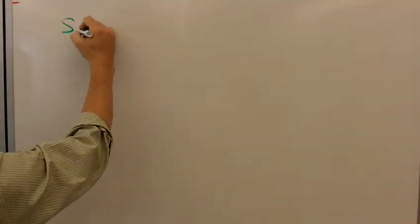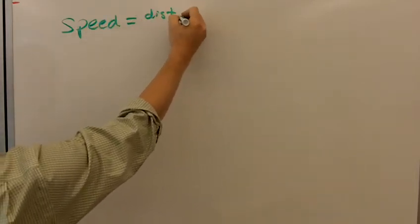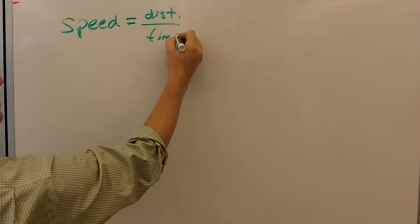Okay, so let's talk about the difference between speed and velocity. Speed is the distance covered by a certain object over the time. It's a rate.